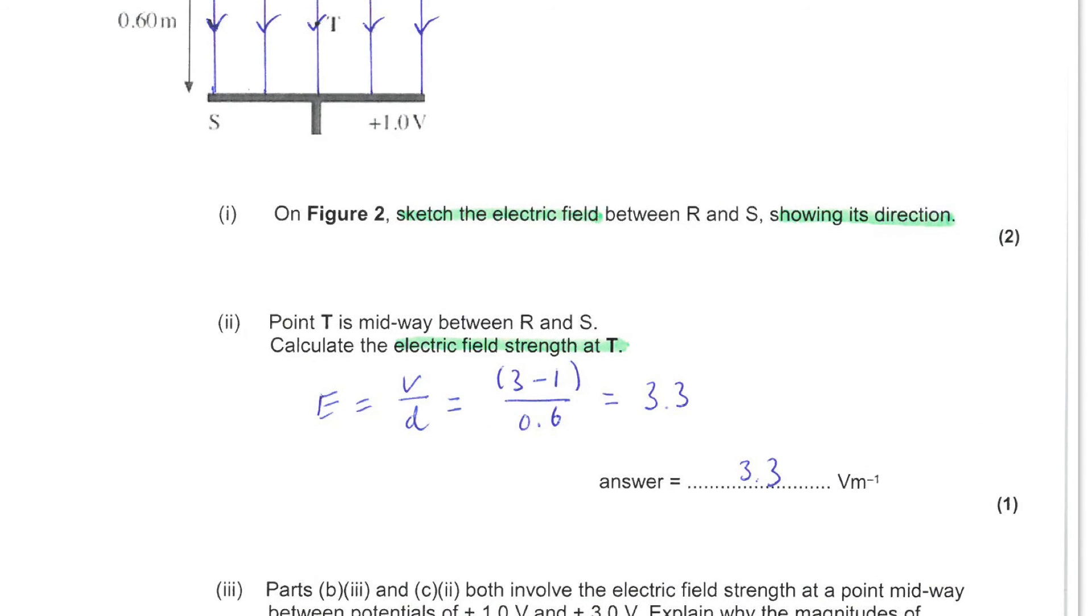Next, you are told that point T is midway between those plates. So here we have point T in the middle. And you are asked to calculate the electric field strength at T. Now, in fact, the exact position of T is not really relevant here because this is a uniform field.